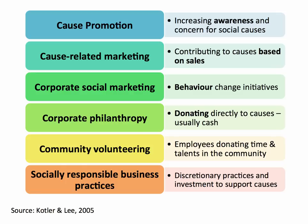Cotter summarised the different ways of doing CSR. You may have come across community volunteering — many organisations provide time off for employees to spend in the community, perhaps offering their expertise to community or societal projects. There's also corporate philanthropy — cash — where many businesses, large and small, put their hands in their pockets and provide cash donations and sponsorship as part of their CSR. And we've seen increasingly larger brands, particularly consumer brands, picking up on cause-related marketing. A great example is the Race for Life with promotion and sponsorship from major supermarket chains.